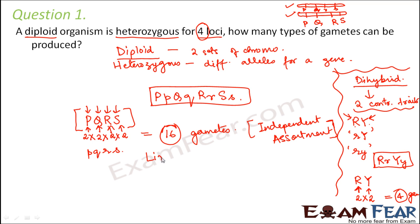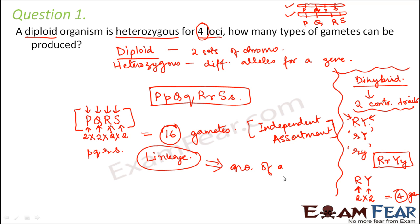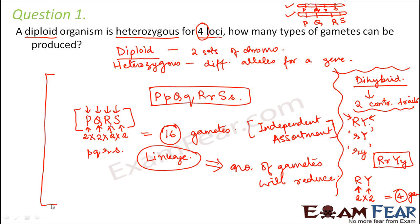In case linkage comes into the picture, the number of gametes will reduce, because whenever there is linkage the two genes become linked and will always get inherited together — so your number of combinations will reduce and therefore the number of gametes will reduce. These 16 gametes are possible only in the case of independent assortment. Please do not just memorize the formula 2 to the power n — try to understand the actual logic of how you arrive at the number of gametes produced.